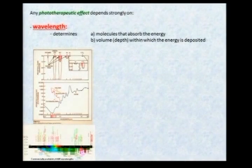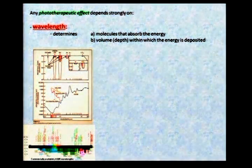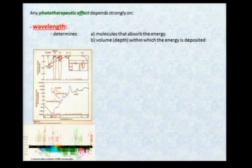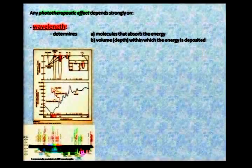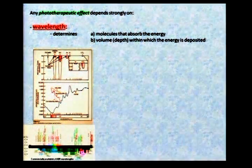There are two parameters that determine precision and selectivity. The first is wavelength, because it determines two things: the molecules that absorb the energy, and the depth into which the energy is deposited. If you want to close down blood vessels, you have to use a wavelength absorbed by hemoglobin. This slide shows the spectrum of tissue components — hemoglobin and water — on a logarithmic scale, along with the 1/e penetration depth of light at different wavelengths, varying from several millimeters to a fraction of a millimeter.